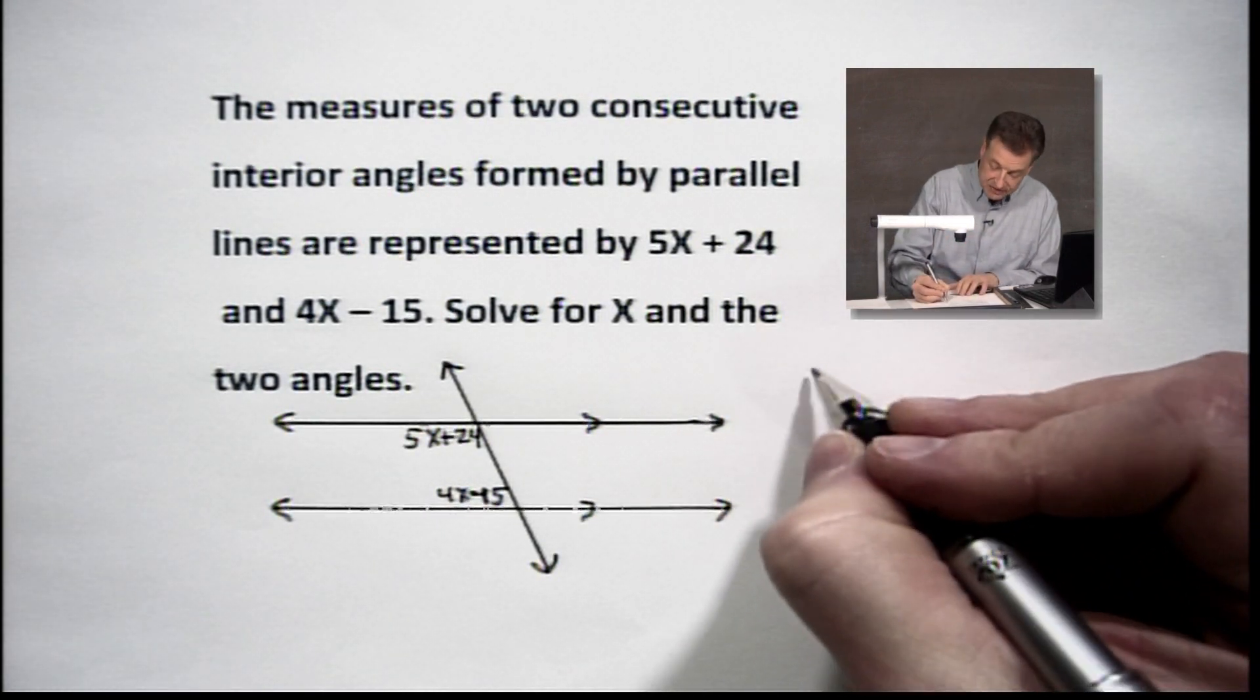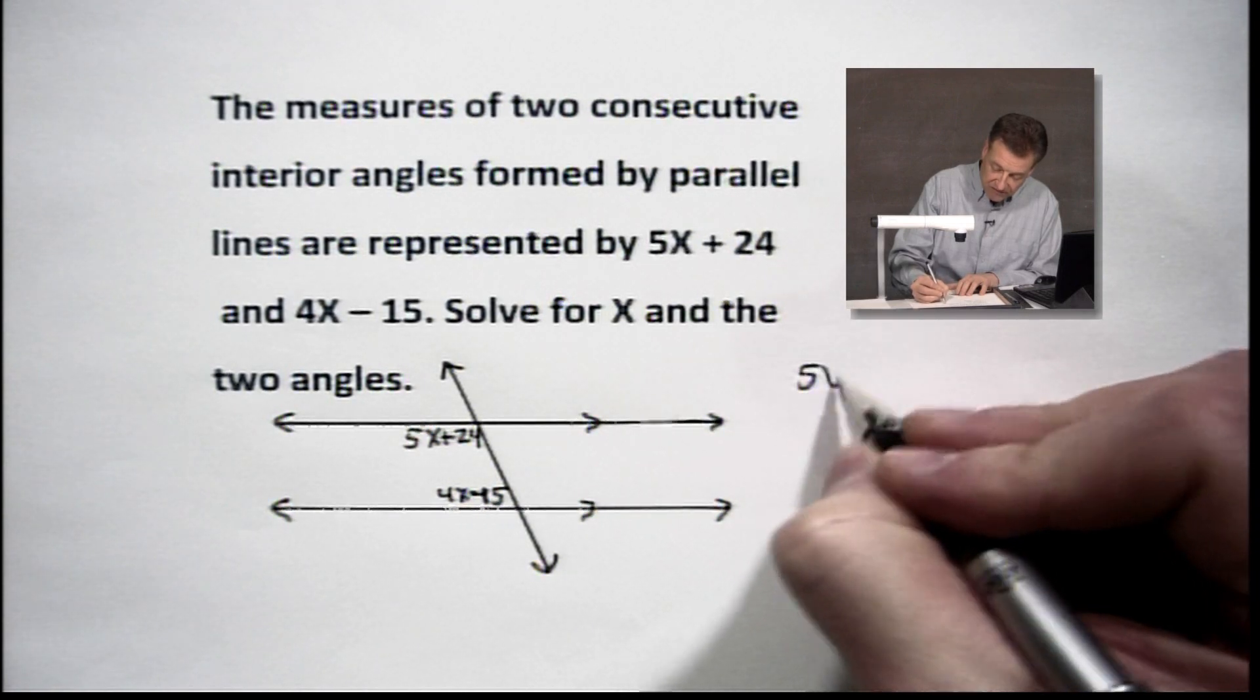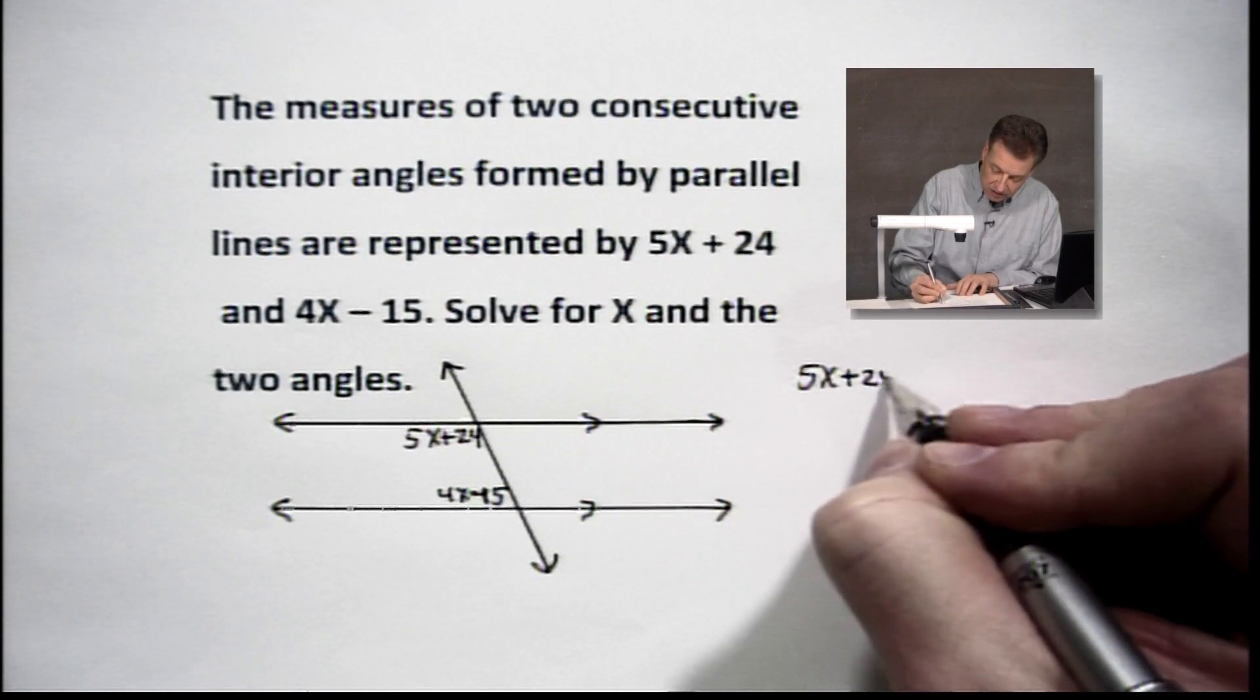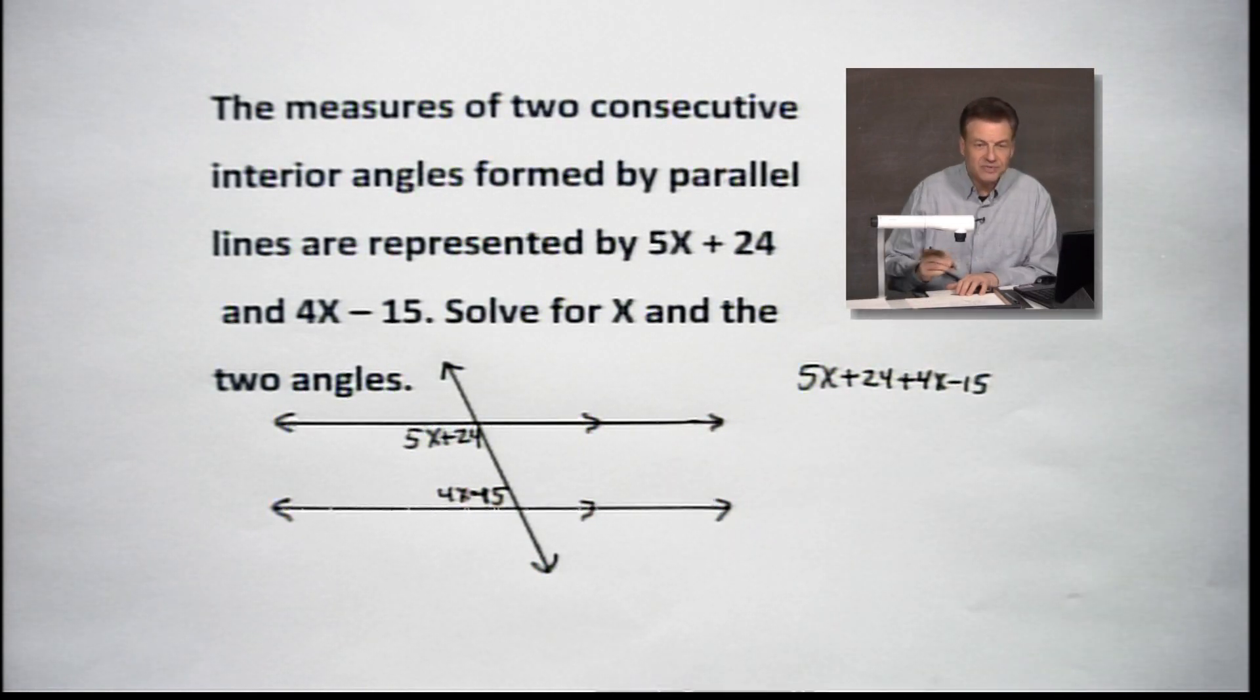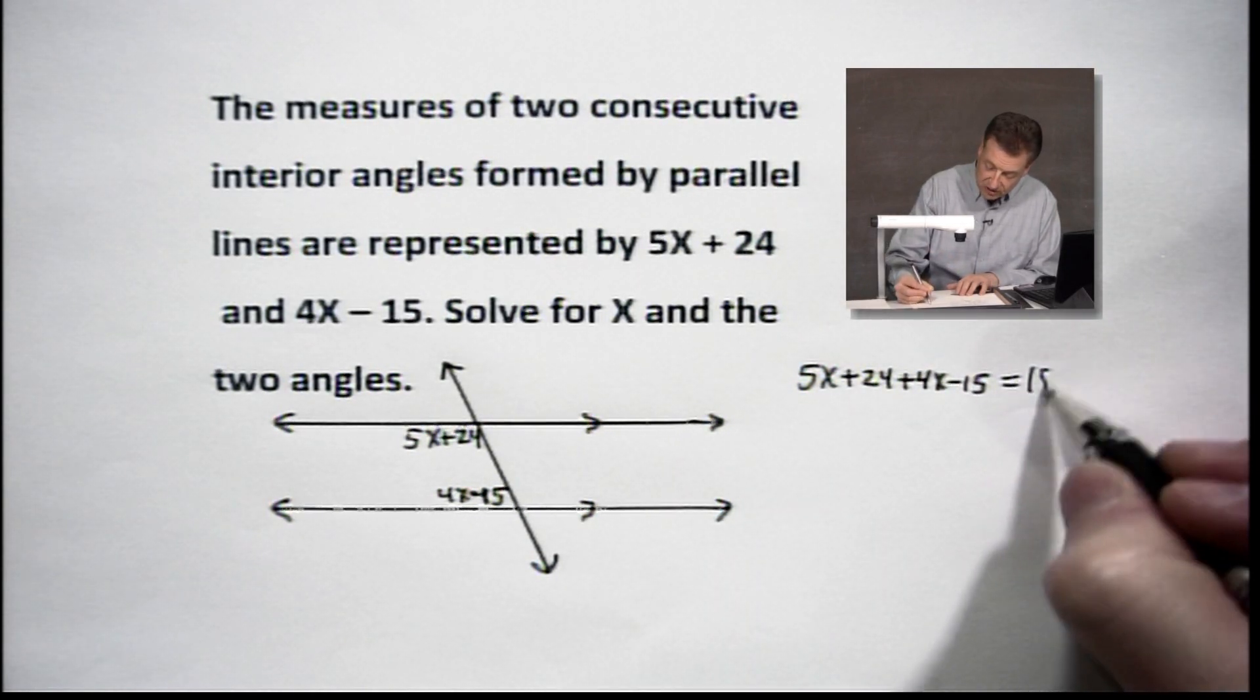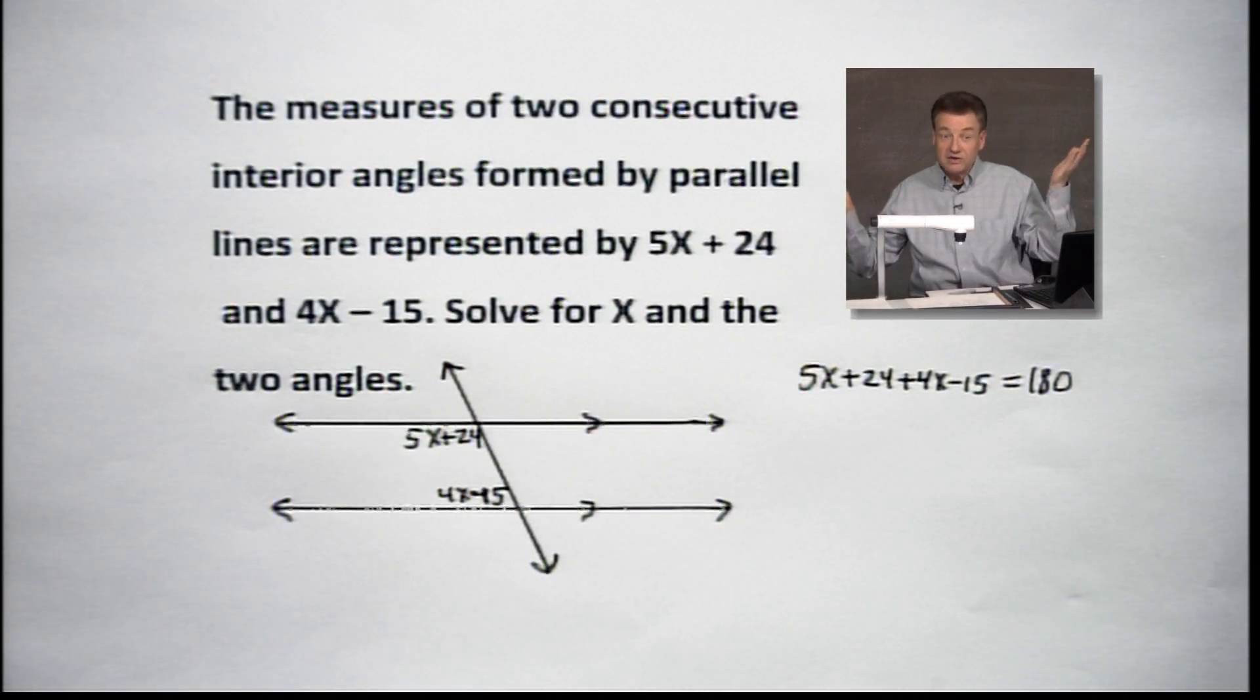Let's set up an equation. We've got 5x + 24, and we're going to add 4x - 15, and that's going to equal 180 because that's what happens with supplementary angles. They add up to 180 degrees.